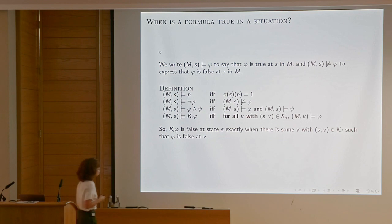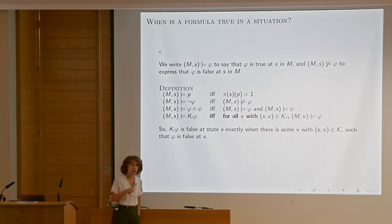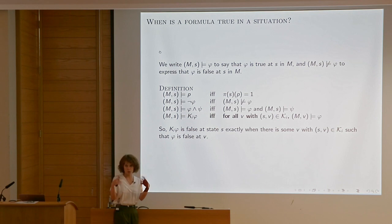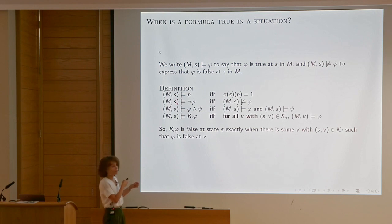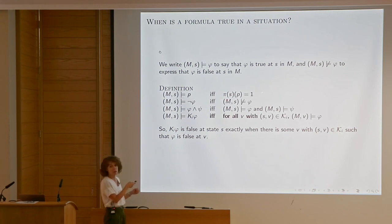We can simply interpret this logical language on these structures, on these graphs. We can say that certain formulas of our language — like K_i φ — hold at a state in a model or not. This is the semantics of our framework: we take a model and a state, and P is satisfied at the state if and only if our valuation function makes it true in that state.